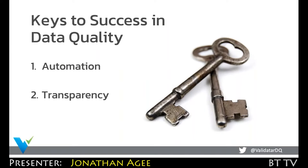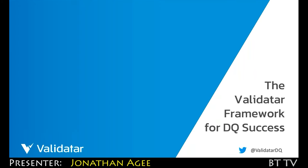The keys to data quality success are really these two elements. One is automation, and then key number two is this communication problem of transparency. We're working really diligently to build into Validator both aspects of this. I want to introduce you to how we think about this framework for data quality success with Validator.